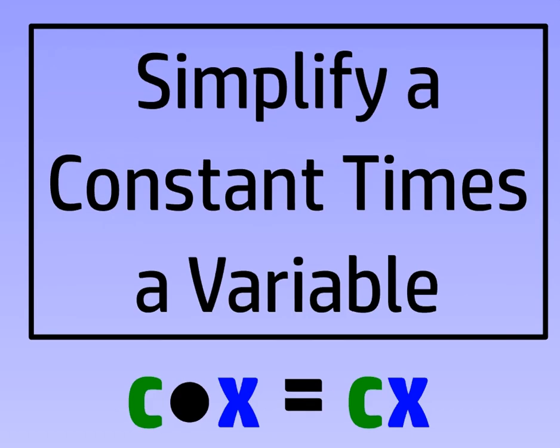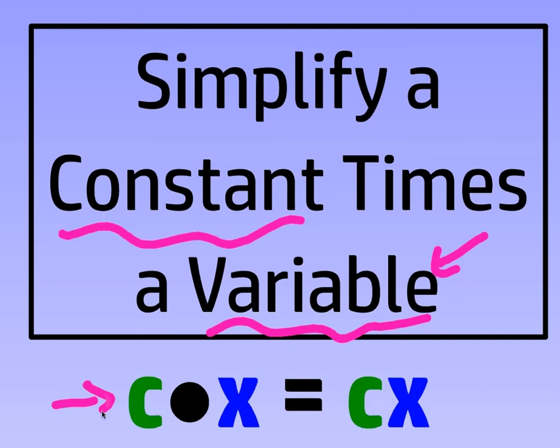So the next lesson is simplify a constant times a variable. Now guess what? There's a couple cases, there's a couple examples on here, where they aren't variables, but they act like variables. And we're going to look at that together. So C, a lot of times in math, means constant. So if we have a constant times a variable, and most of the time we use X, then we can just write it as CX. In other words, just get rid of that multiplication sign, and we know that when those two things are next to each other, that means multiply.